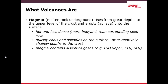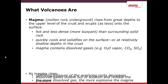Magma is very hot and dense, but more buoyant than the surrounding solid rock. It quickly cools and solidifies on the surface because of relatively low temperatures there. Magma also contains dissolved gases as well as molten rock.